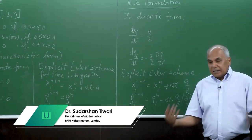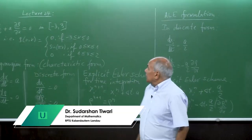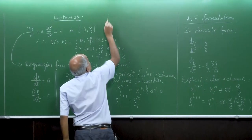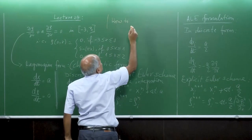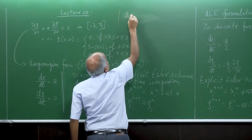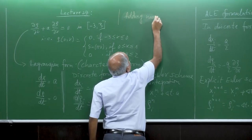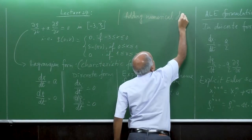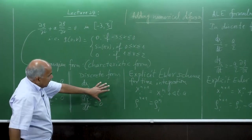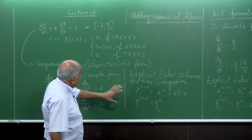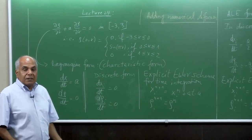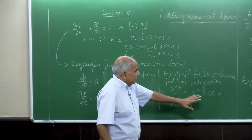Today I continue from yesterday. We are still in the linear advection equation, and now we look at how to add some type of numerical diffusion. In the last simulation, if you write the full Lagrangian form there is no numerical diffusion, so we got the exact solution. If you have fewer or more points, we are less accurate.